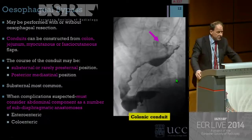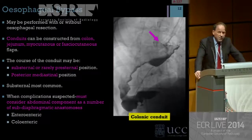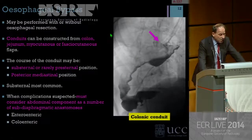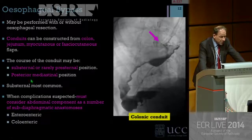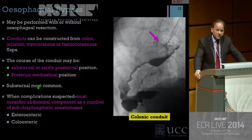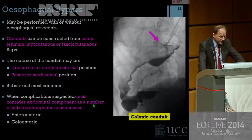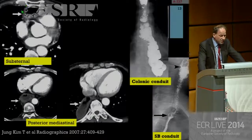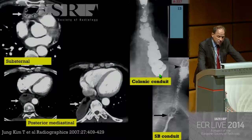Esophageal bypass procedures are interesting and sometimes performed with esophagectomy, but can also be performed for advanced disease without esophageal resection. The conduits are usually made of colon or jejunum, or myocutaneous and fasciocutaneous flaps. The course of the conduit is variable — it can be substernal, pre-sternal, or posterior mediastinal; substernal is most common. When complications occur, remember there's been extensive work and multiple anastomoses beneath the diaphragm, so you must also image the abdomen. On CT you see substernal and posterior mediastinal colonic conduits; on fluoroscopy, a colonic conduit shows normal haustrations and a jejunal conduit shows normal valvulae conniventes.